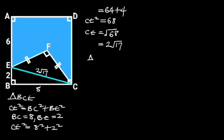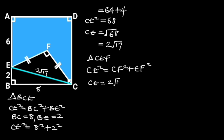Next, let's focus on triangle CEF. Triangle CEF is an isosceles right triangle with CF equal to EF. From Pythagoras theorem, CE squared is equal to CF squared plus EF squared. CE is equal to 2√17. Let CF be X. Since CF is equal to EF, EF will also be X.